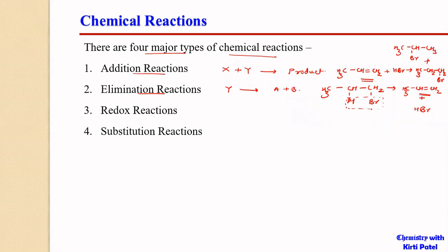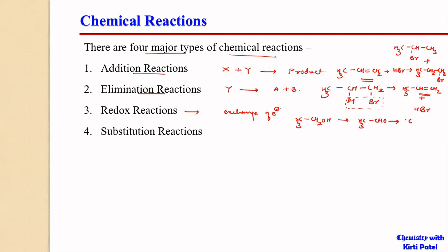In an elimination reaction, the number of bonds increases — from a single bond it can become a double bond, or from a double bond a triple bond can be formed. In a redox reaction, it is generally the exchange of electrons that is happening. For example, CH3CH2OH gets oxidized to acetaldehyde, and from acetaldehyde we can get acetic acid. These are all redox reactions where the molecules are getting oxidized and the species acting as a catalyst gets reduced.